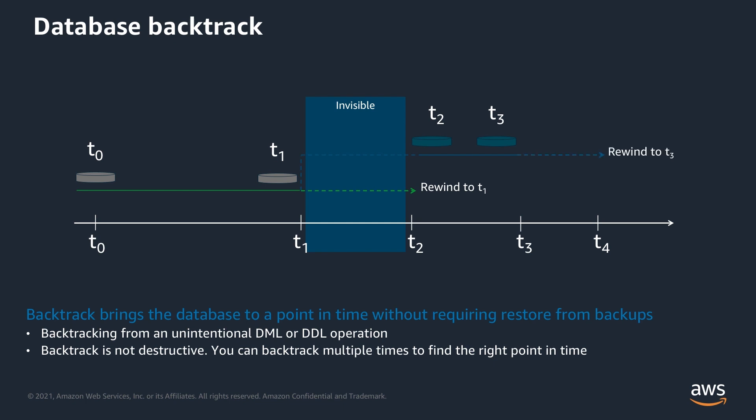Now you've made changes or fixes, and you want to rewind back again to perform some more testing from T3. Backtrack allows you to go back and forth until you find the right time you're happy with. One thing to keep in mind: Aurora always backtracks to a time that is consistent for the DB cluster, to eliminate uncommitted transactions in your database. When you specify a time for a backtrack, Aurora automatically chooses the nearest possible consistent time to perform the backtrack operation.